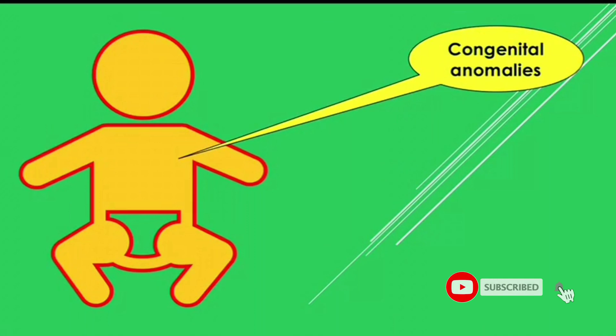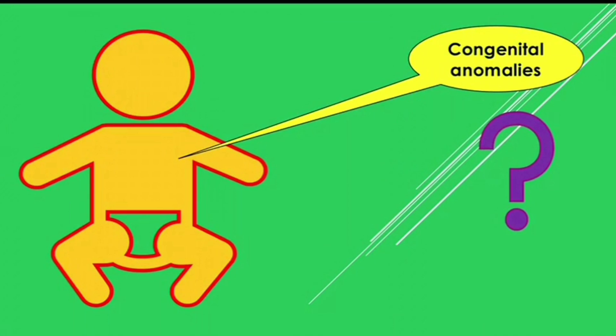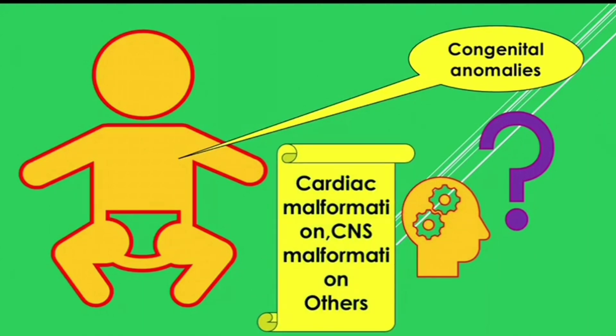Congenital anomalies are also very common in IDM babies. There is an association with increased HbA1c levels and increased risk of congenital anomaly. About two-thirds of cases involve cardiac and CNS malformations. Others include intestinal atresia and renal agenesis.